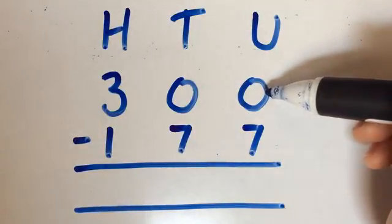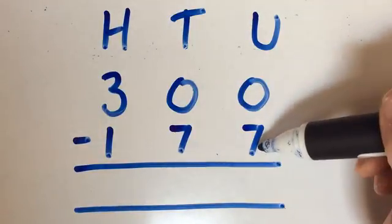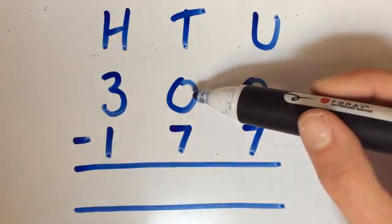We've got no units, take away 7 units, which we can't do. We've got to stop at the tens.